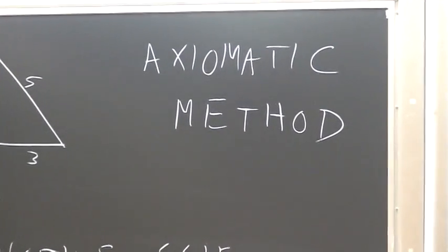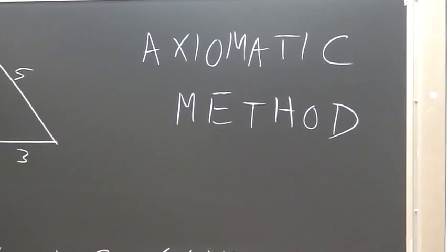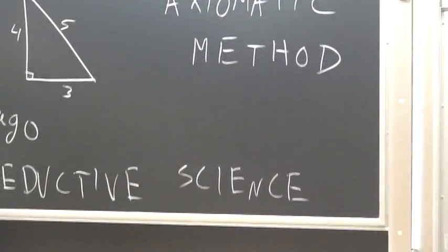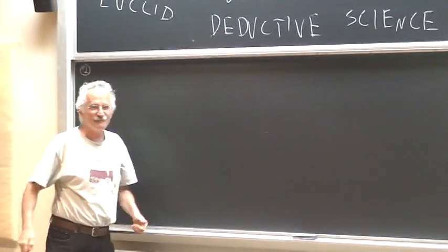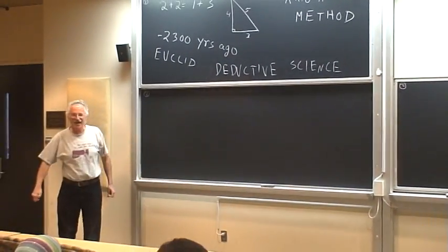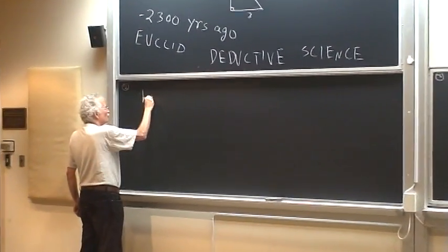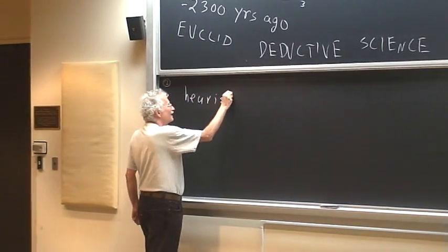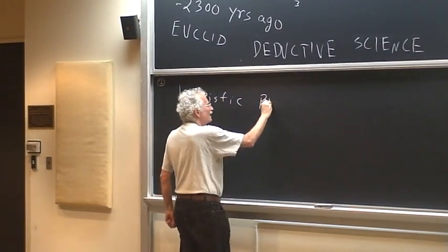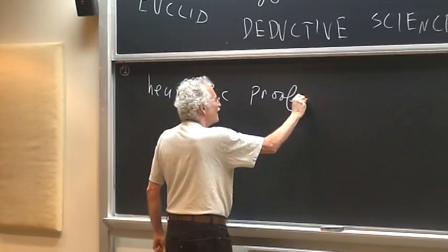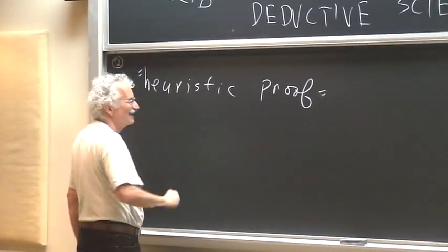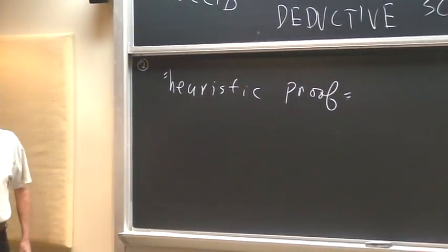And proof meant rigorous proof. I just read in the latest notices, somebody making fun of the phrase heuristic proof. And he said, heuristic proof is an oxymoron. How can a proof be heuristic? You either have a proof or you don't have a proof.